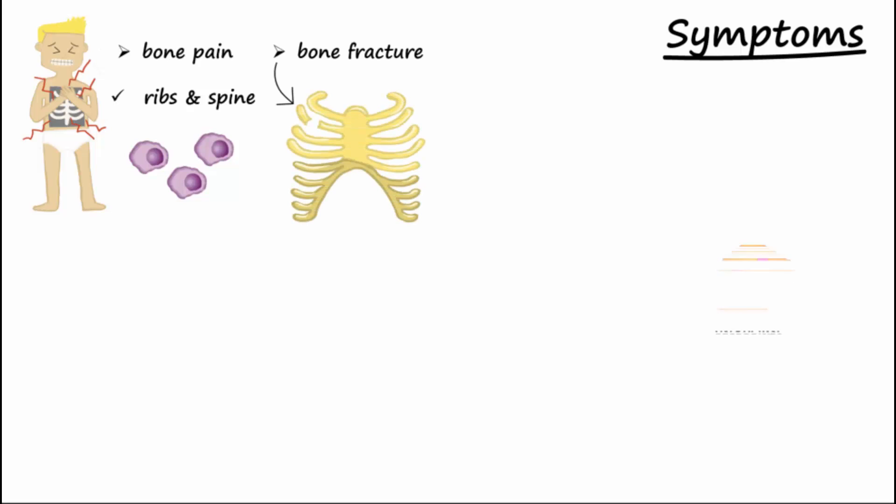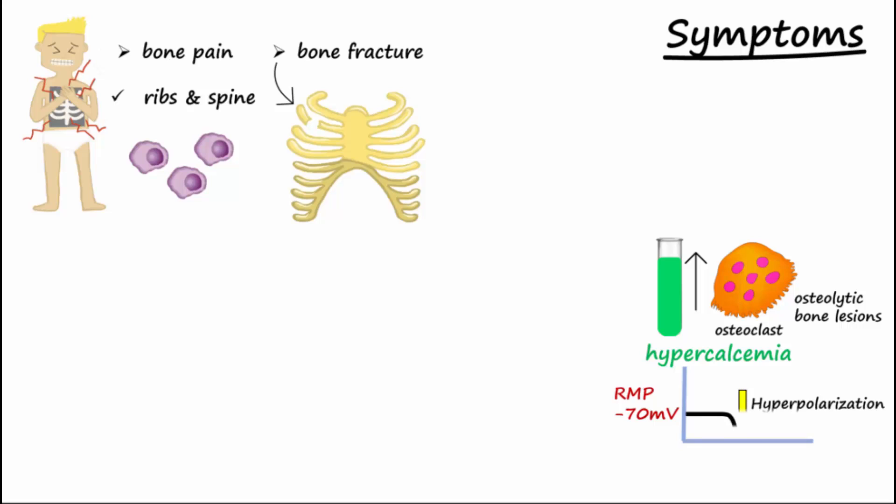Osteoclasts are excessively activated, causing osteolytic bone lesions. These lesions are broken down bone that release calcium from the bone into the blood, causing hypercalcemia and hyperpolarization of excitable cells like neurons and muscle cells.